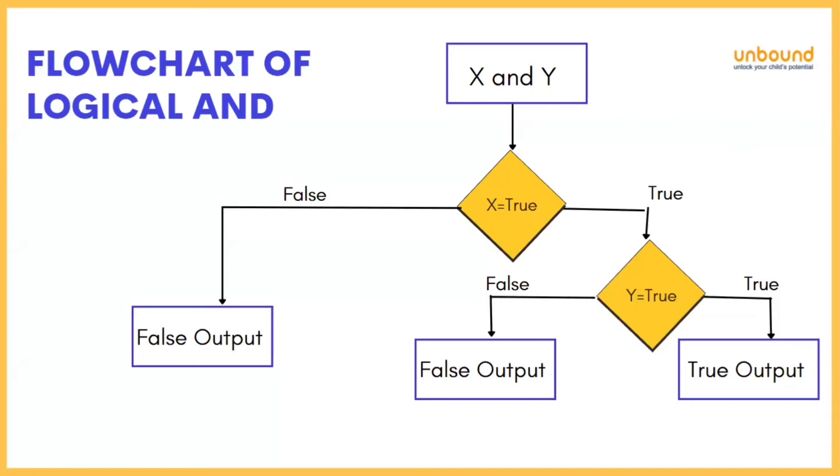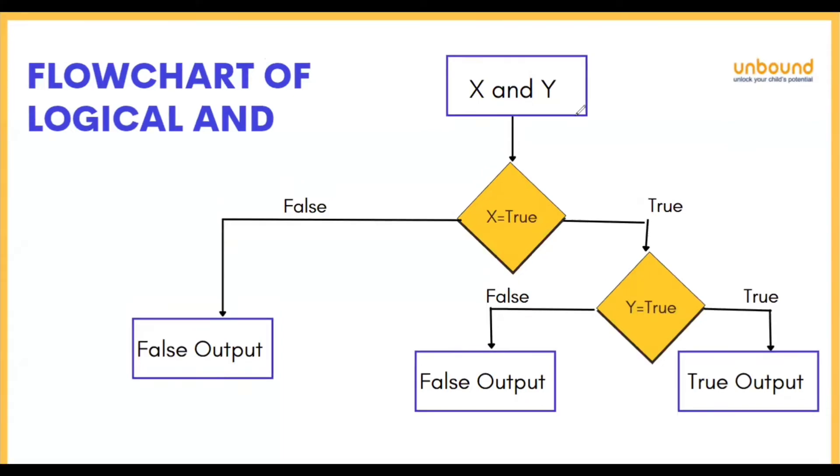Let's learn the flowchart of logical and. So the flowchart is just like the table. So what happens, here are two values. Just like the previous example, there was 5, 5 and 6.